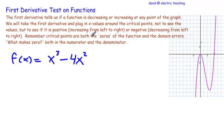Remember, critical points are both the zeros of the function and the domain errors if there are any. What makes zero both in the numerator and in the denominator if there is one? What makes zero is a line I use with my students all the time.